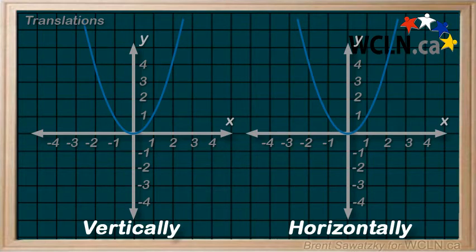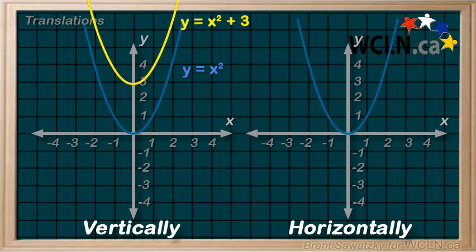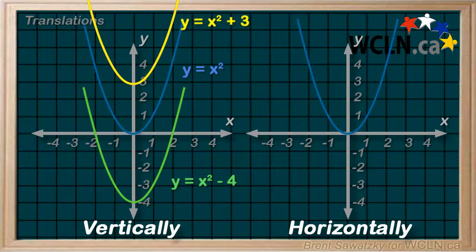Now we've already had some experience with vertical translations, that is adding or subtracting a number at the end of the equation here. A positive number at the end shifts the graph up, while a negative number at the end shifts the graph down.